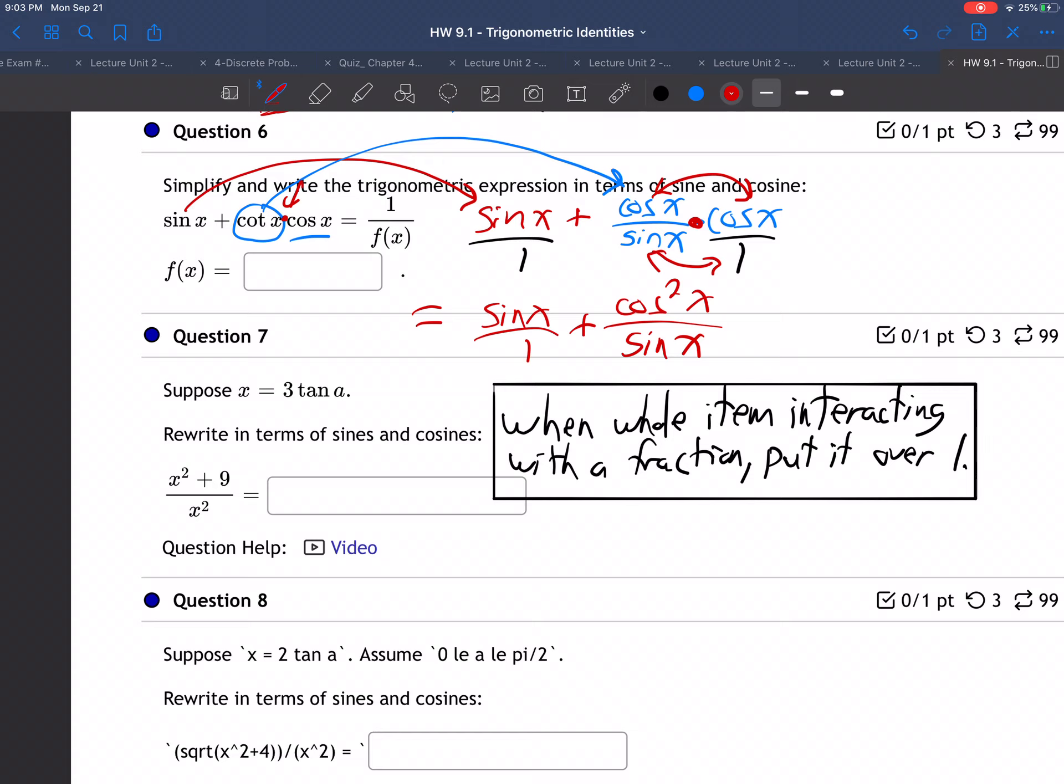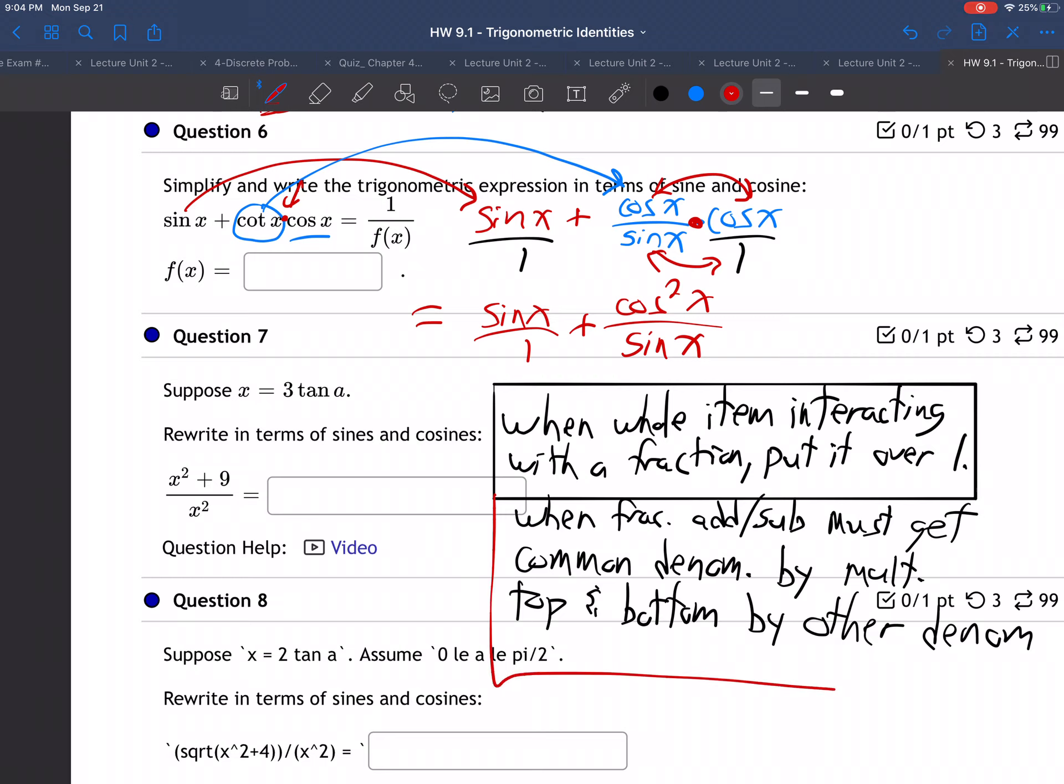So now, here's the other fact you've got to be really clear on. When fractions are added or subtracted, you must get a common denominator by multiplying top and bottom by the other denominator. By the other denominator.